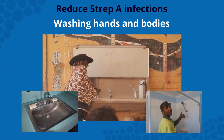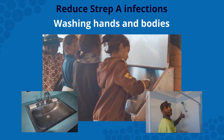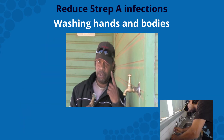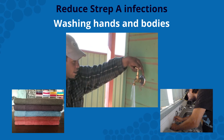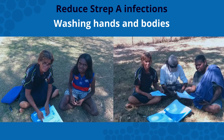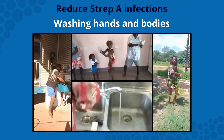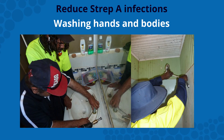Washing hands and bodies is directly associated with reducing Strep A infection. Access to water, working taps and sinks, soap and clean towels are required for effective washing. Social beliefs about hygiene practices or health behaviours may also influence washing, so strategies to promote effective hand and body washing should be developed by the local community to suit local priorities and preferences.